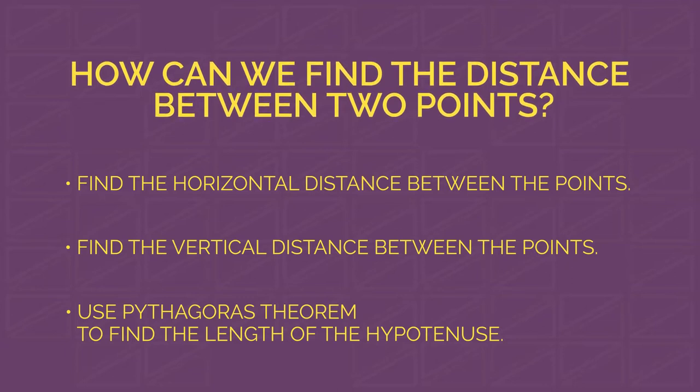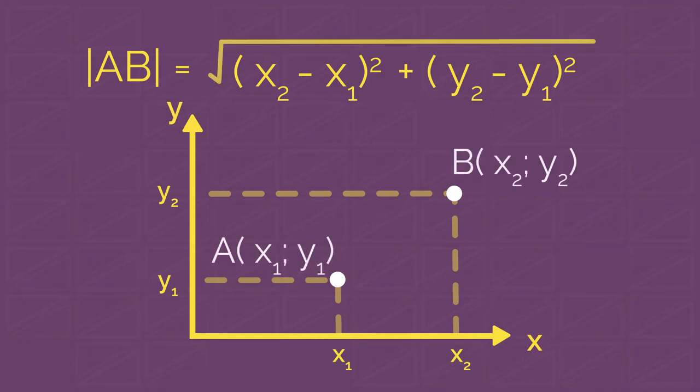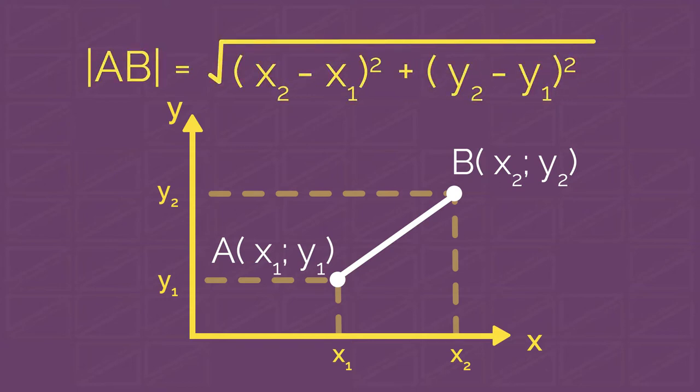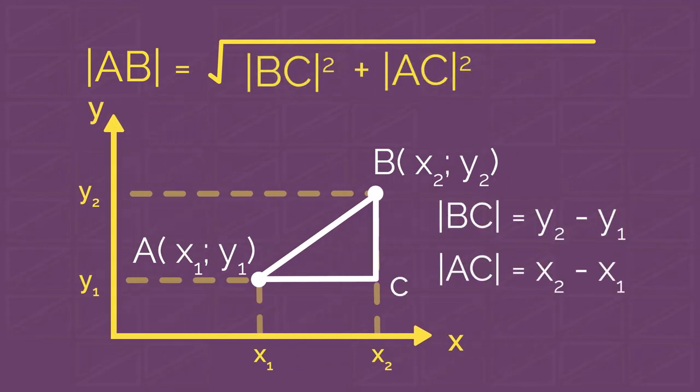For those of you who like formulas, here's what it is. If we have two points A and B, then we can always use the following formula to find the distance between these points. This looks scary, doesn't it? But let's gather our courage and look closer. This is just another representation of Pythagoras theorem.